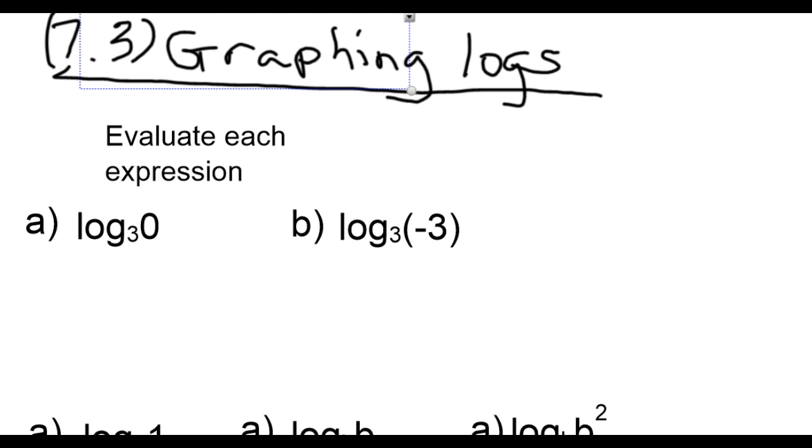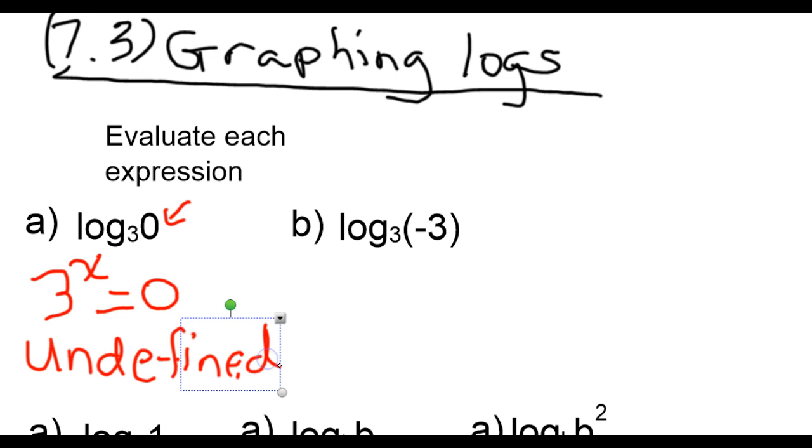To figure that out, I'm going to write that in exponential form: 3 to what power is 0? If you think about it, it's impossible to raise 3 to any power and get 0 as my overall answer. So anytime you see your argument is 0, you know that this is an undefined value. That's not possible. So you never want your argument to be 0.